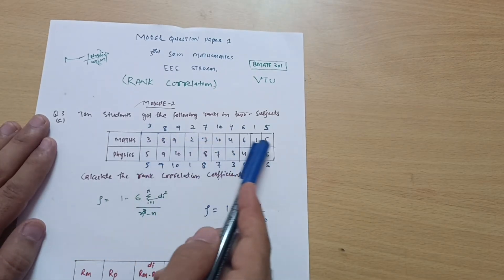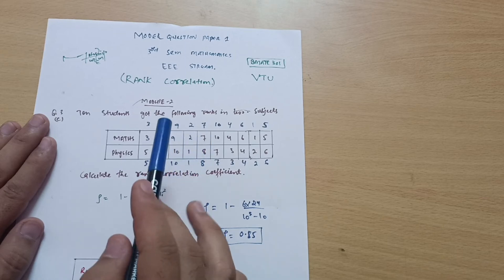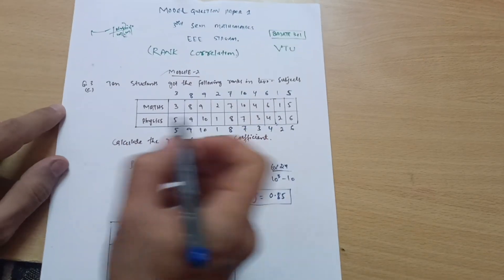First of all, check these numbers. It depends upon your choice which order you will take, either ascending order or descending order. Suppose if I write 1, 2, 3, 4, this is your ascending order. 4, 3, 2, 1, this is your descending order.